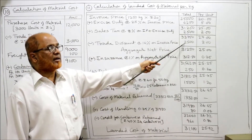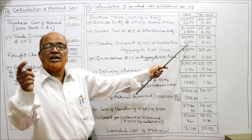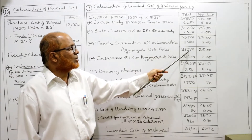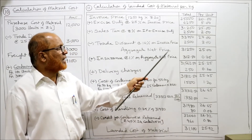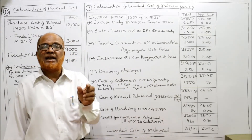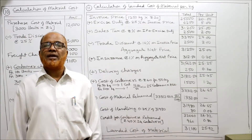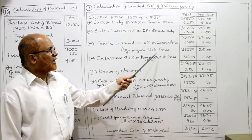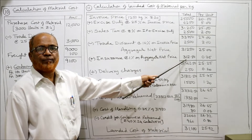Per kilogram: 2,500 ÷ 1250 = 2 rupees per kilogram. After subtracting trade discount, we get 31,250 as the aggregate net price and 25 rupees per kilogram. To this we add insurance at 1% of the aggregate net price. So 1% of 31,250 = 312.5 rupees.